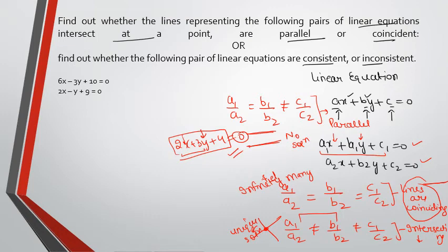So for coinciding and intersecting lines, the concept is there is consistency of solution. Solution exists. Whereas if you have lines parallel, then the lines are inconsistent and there are no solutions. So let's see with the help of an example, is it consistent or not.